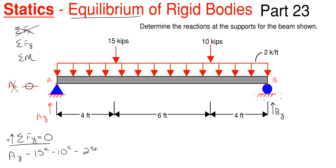For the uniform load, I have to multiply two kips per foot by the total distance it runs to convert it to an equivalent point load. The load runs four plus six plus four, so that's 14 feet total. Lastly, I have B sub y assumed upward, so it's positive. With this F y equation we have two unknowns — both reactions — so we can't solve it yet. Typically you come to F y secondly; the moment equation will get you one reaction first.